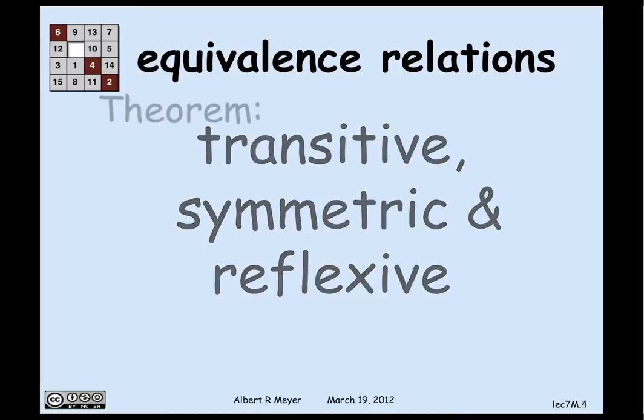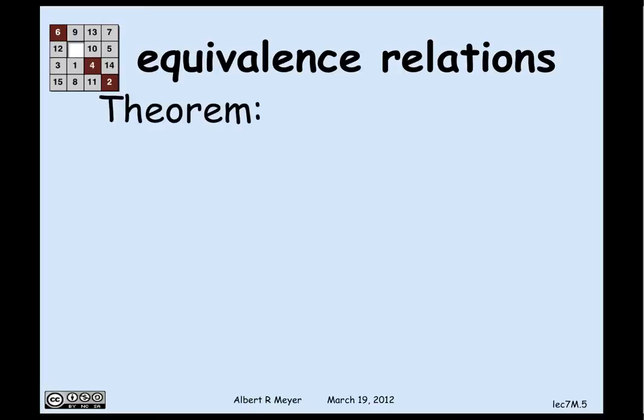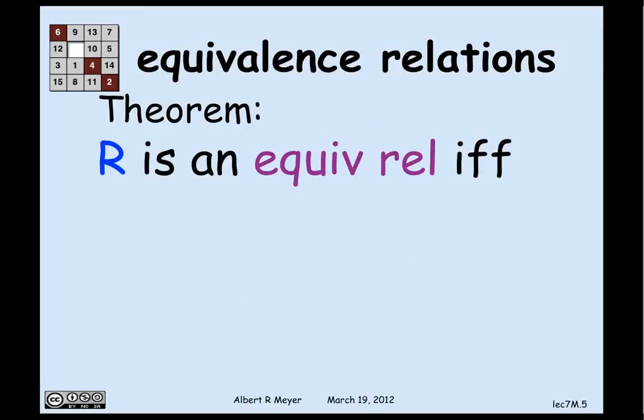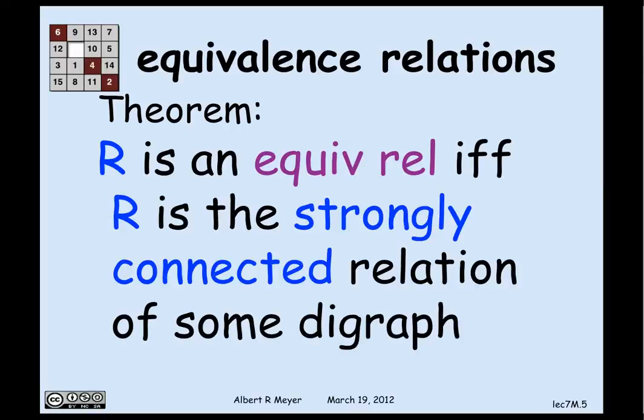The strong connectedness relation in any digraph is an equivalence relation. And the theorem is, conversely, that any equivalence relation is the strongly connected relation of some digraph. The proof is trivial — it is the strongly connected relation of itself.